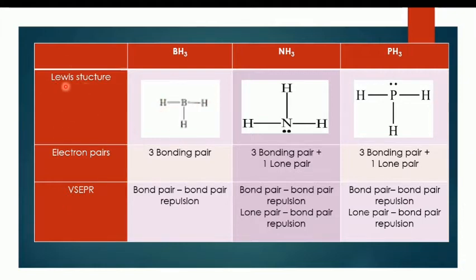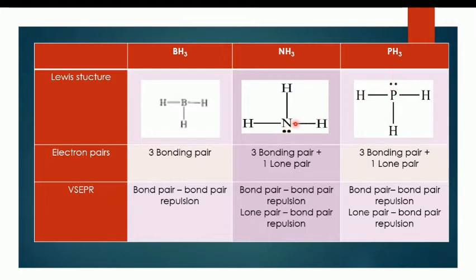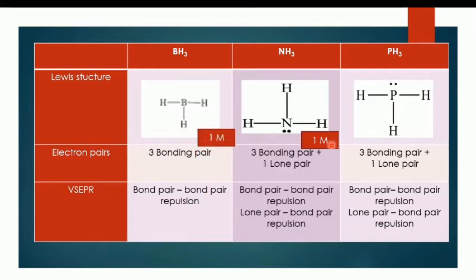The Lewis structure of PH3 is shown here. The Lewis structure of NH3 is shown here. Note that N and P are in the same group in the periodic table, so both have one lone pair. The valence electrons are five for both atoms, so the Lewis structure of both molecules is the same form. You will get one mark for each Lewis structure drawn correctly.